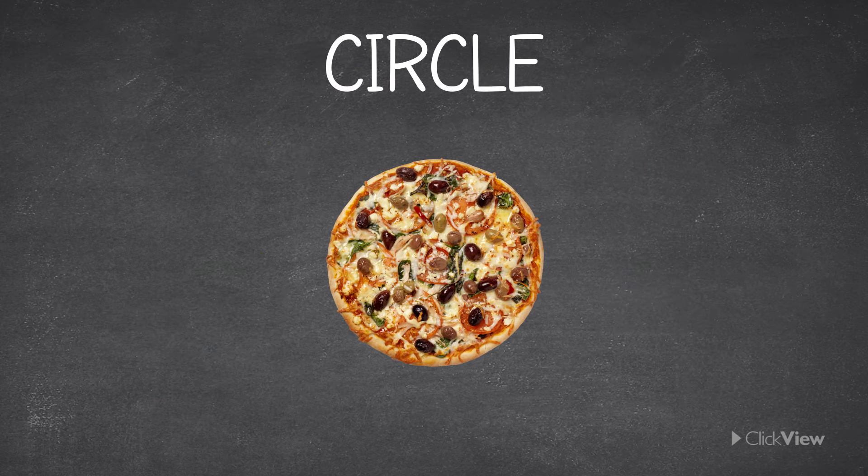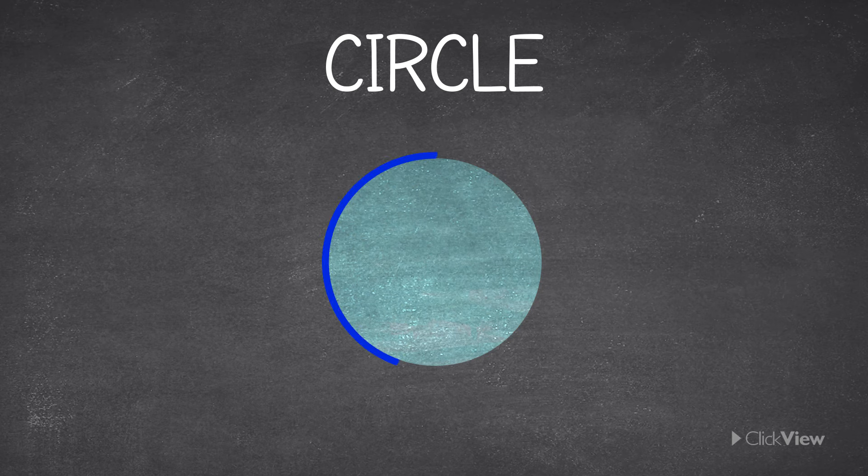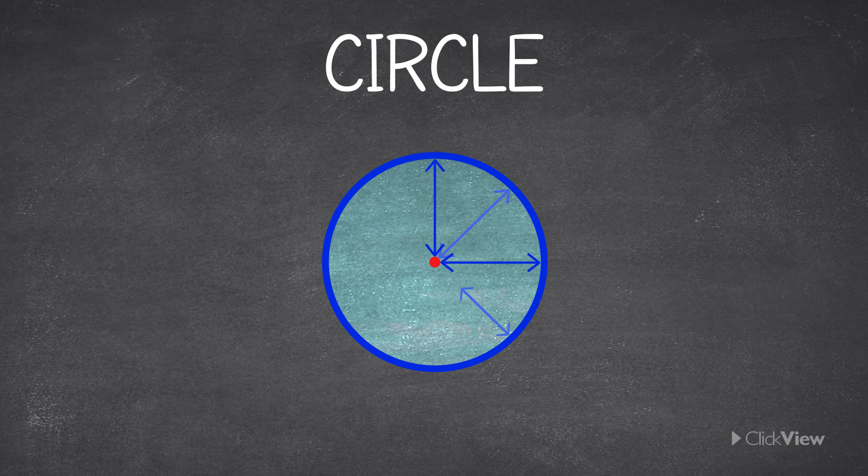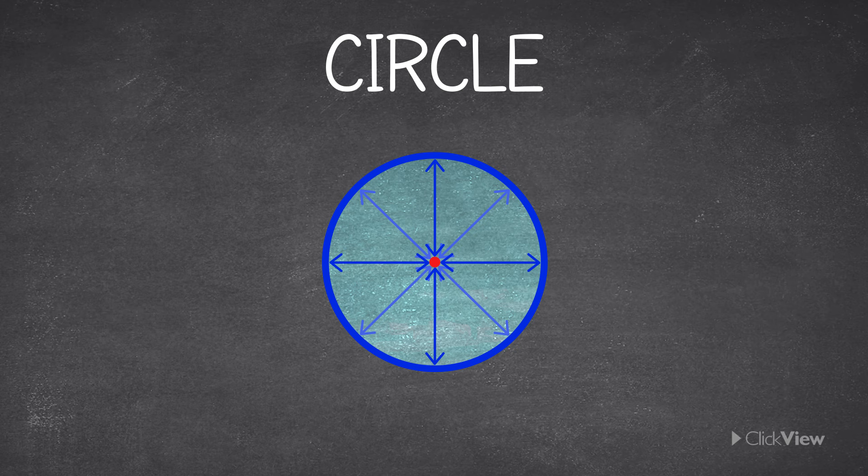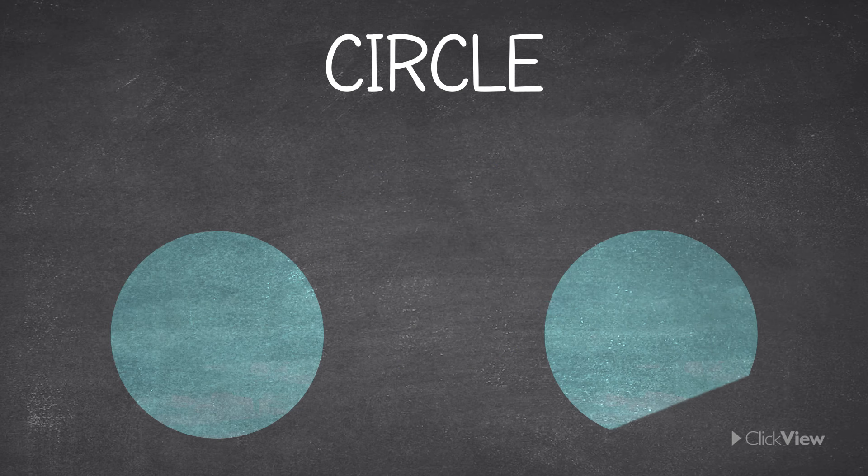A circle is a round shape formed by a curved line, where any point on this line is always the same distance from the centre. Circles have no corners and no sides.